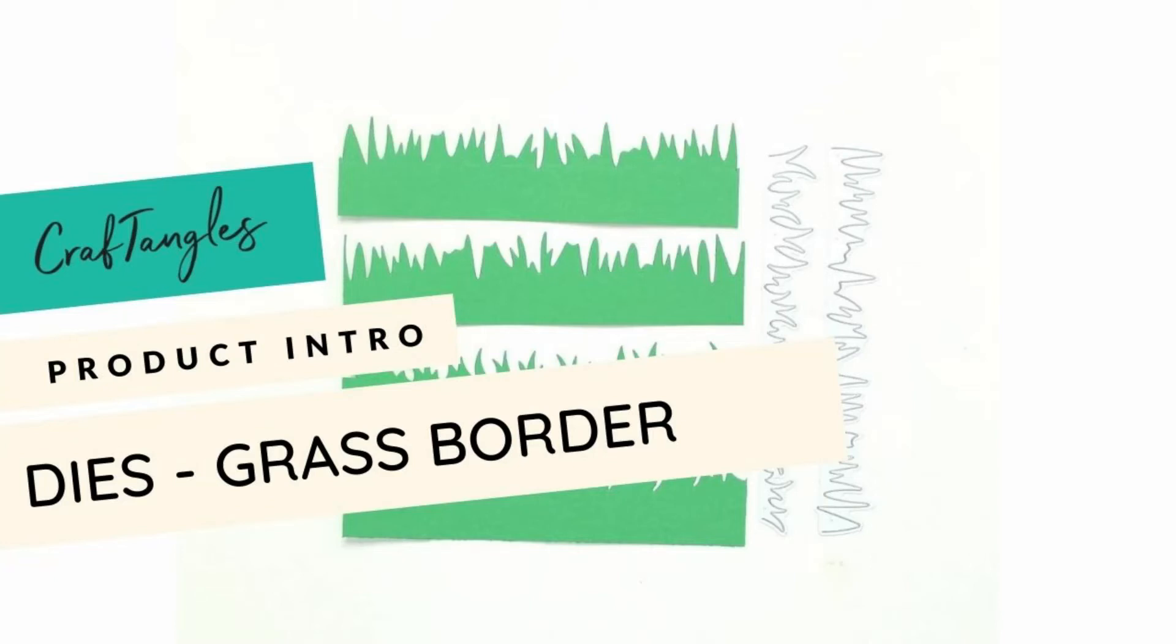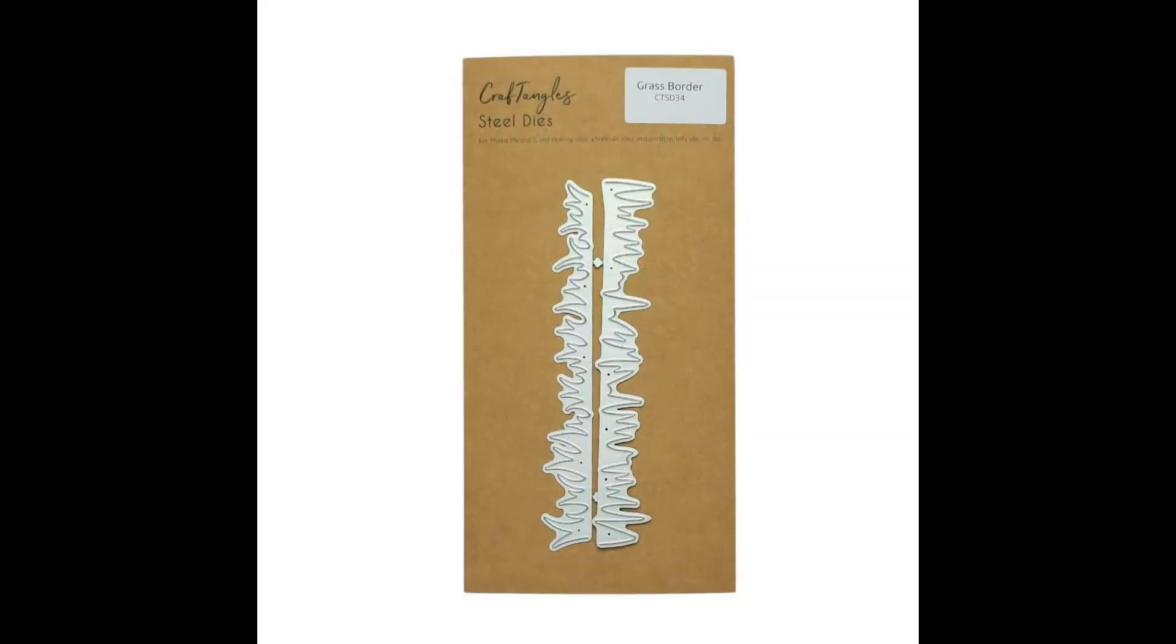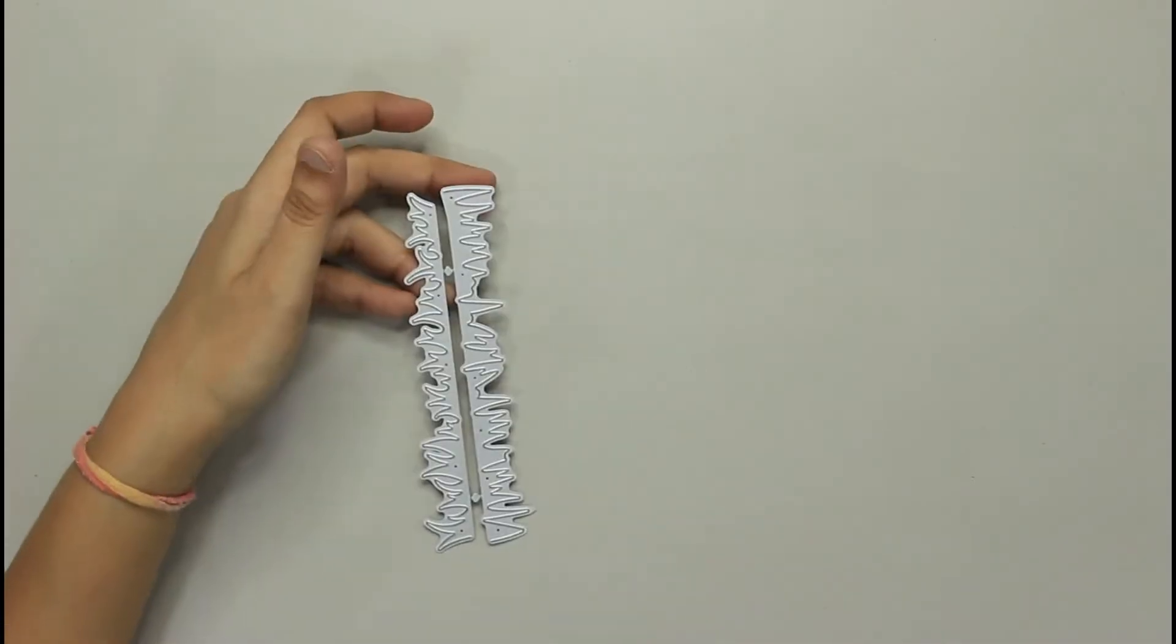Hi everyone, we are super excited to introduce you to another die from Craft Angles, which is Grass Border. This is how the die comes - it contains two dies which you can use together or individually. In the first part of the video, I'll show you how you can use them together.